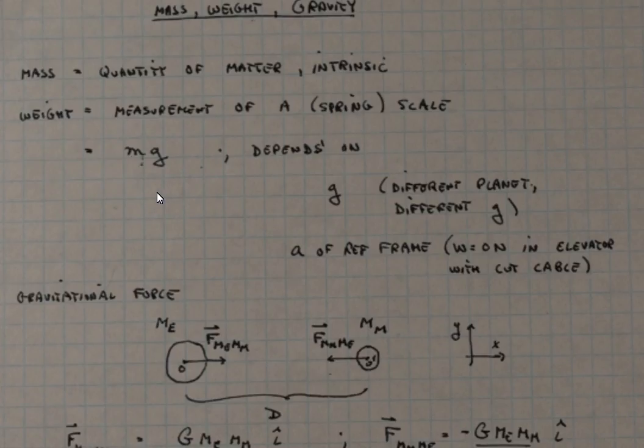If we are in a gravitational field, then the mass is going to have weight and the weight will be m times g. It's going to depend on what g is, and different planets have different g's.